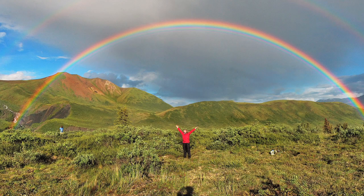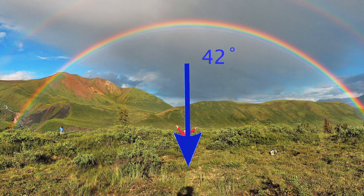The result of this is the rainbow that we see in this next picture. The angle between the anti-sun direction, which is given by the shadow of the photographer's head at the bottom, and the rainbow is 42 degrees.